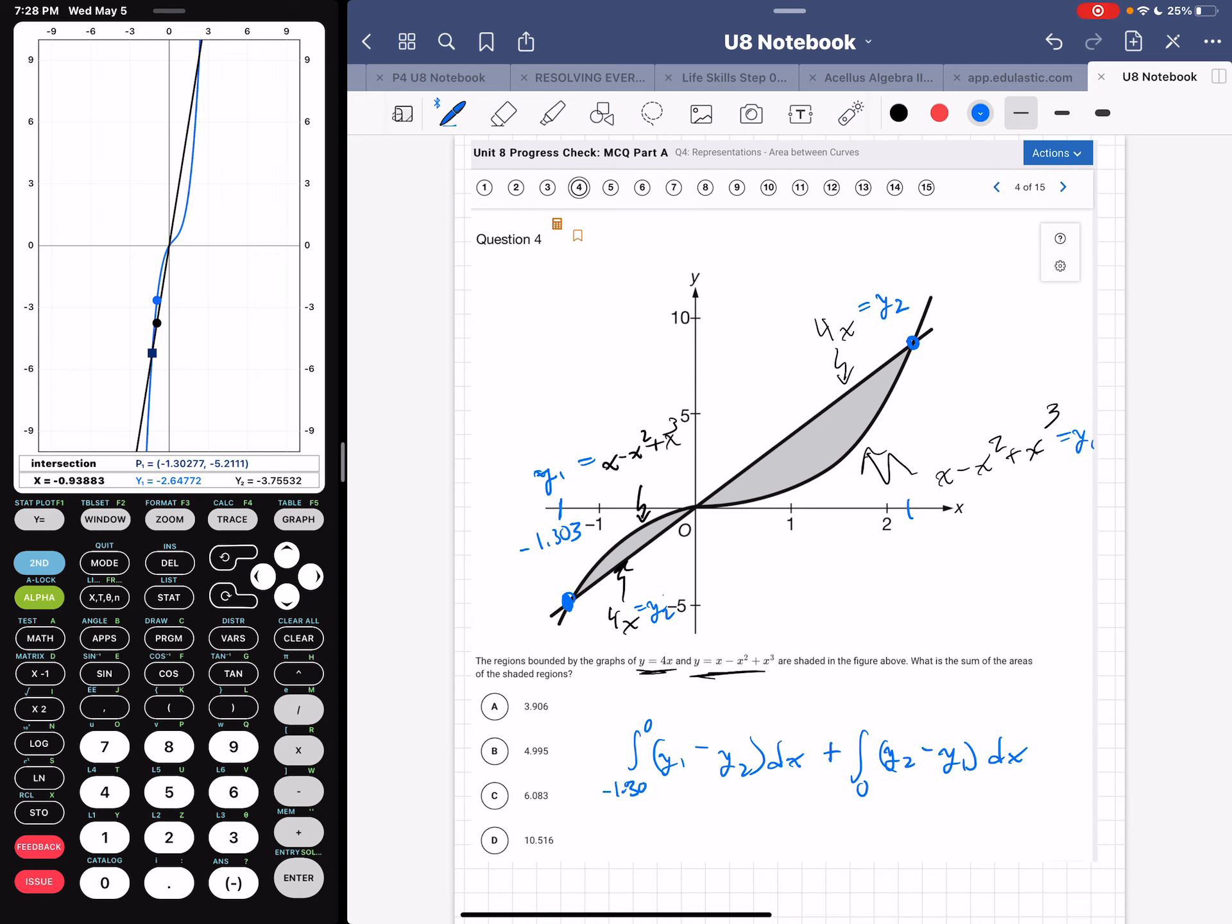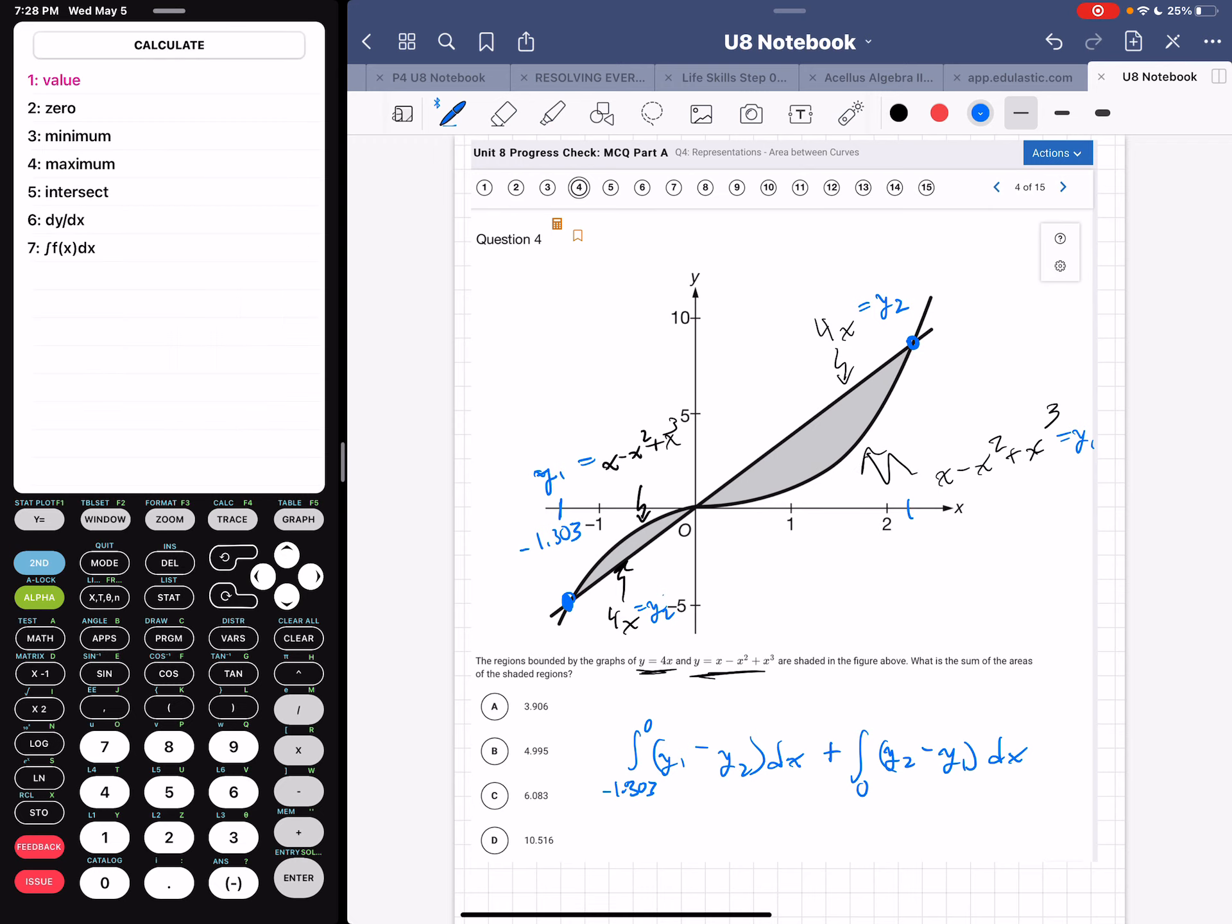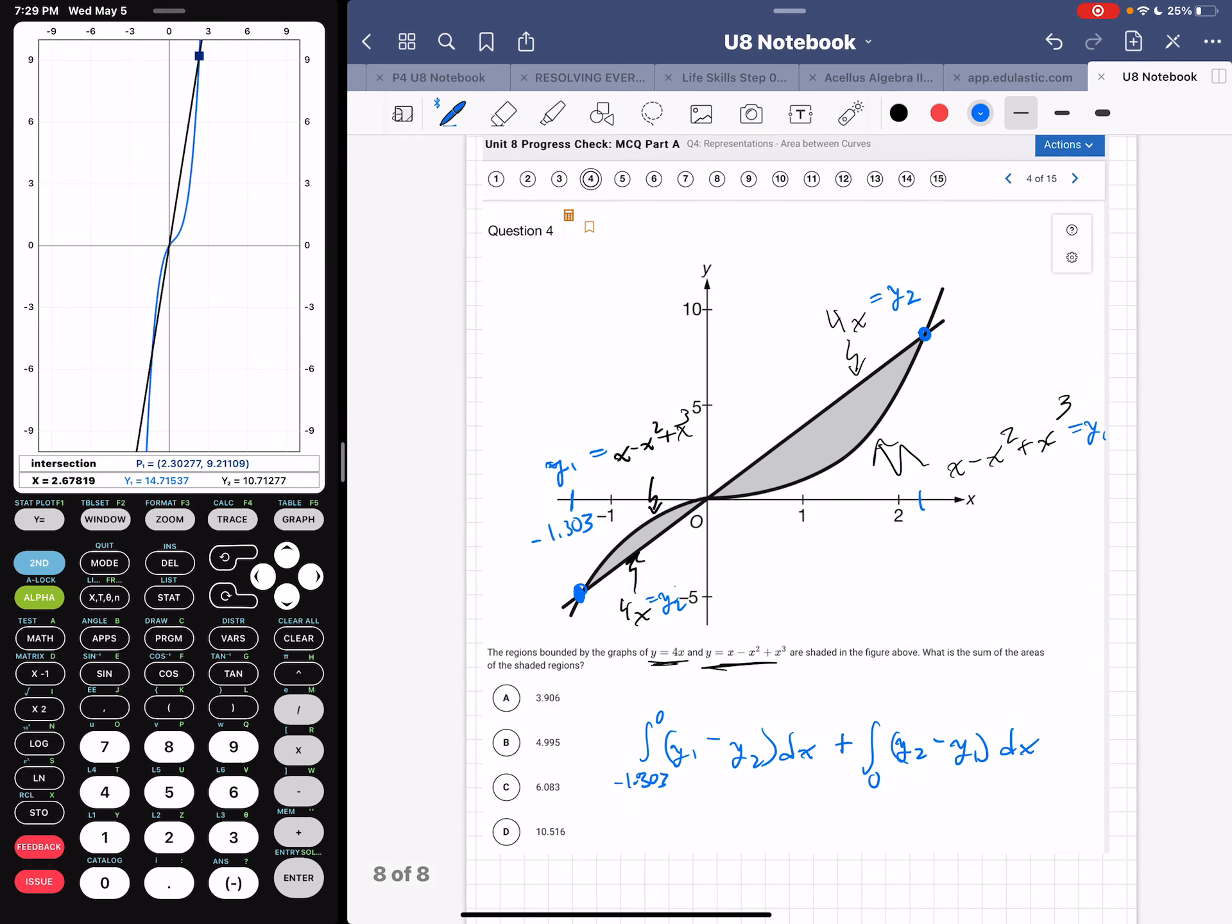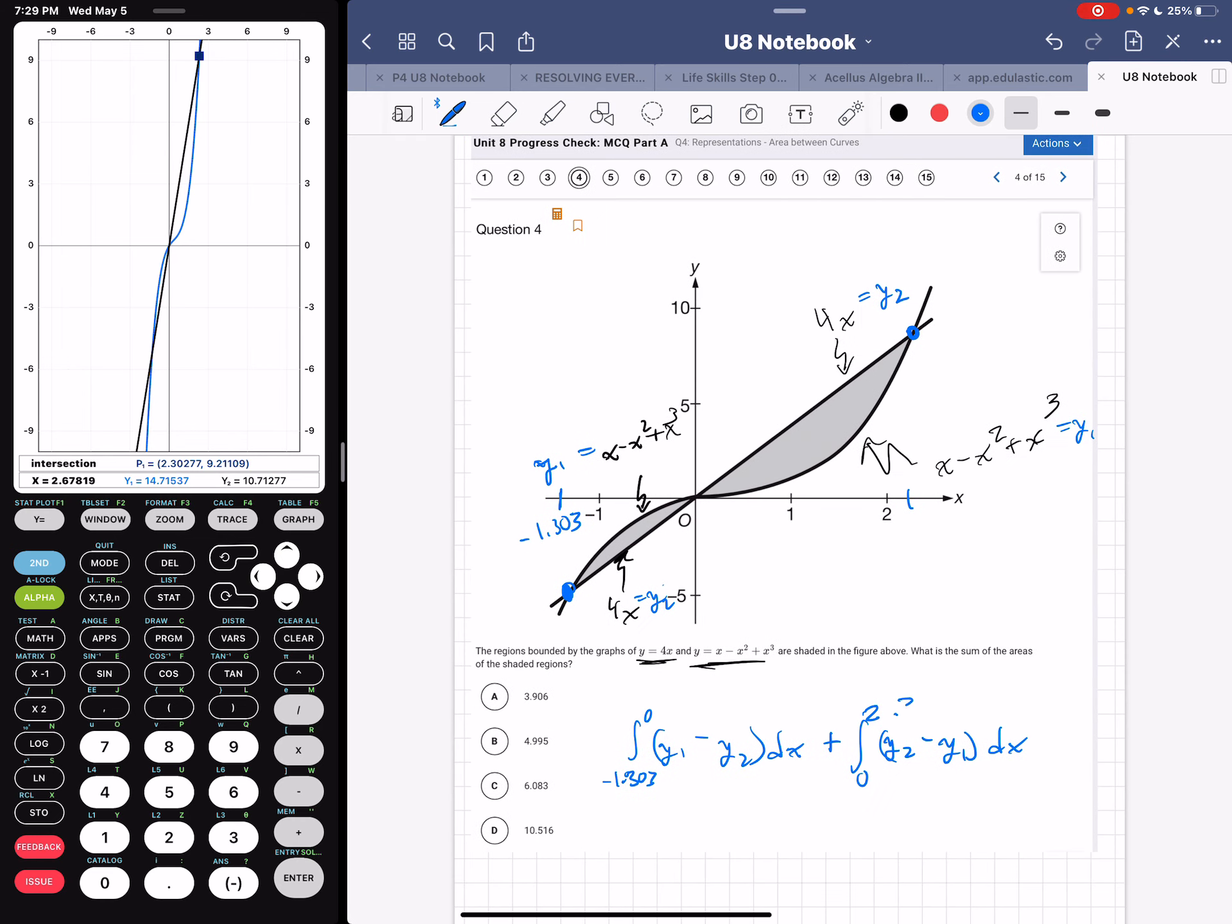Negative 1.303. And now we need the other point of intersection, so I'll hit second, trace. And oops, I don't want that. I accidentally hit 8. I want 5. Okay, left bound is going to be this guy. And then right bound is going to be this guy. And it looks like it's 2.303. Alright, you always round it to the third decimal. Or you can just write whatever your calculator says. 3-0-2-7-7. That's up to you. Or 2.302-7-7.